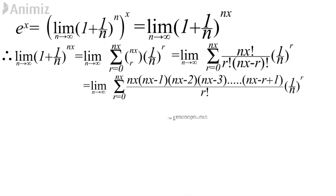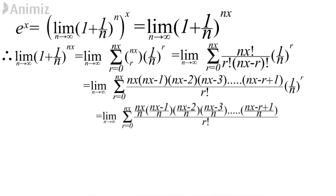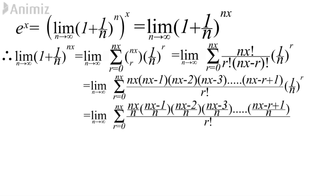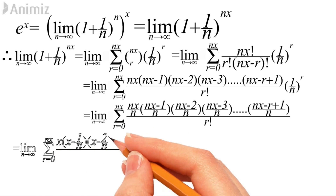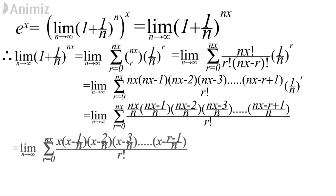As in the previous case, we take each 1/n and multiply it into the numerator terms. Then breaking each term in the numerator, we get: x·(x - 1/n)·(x - 2/n)·(x - 3/n)·...·(x - (r-1)/n), all divided by r!.